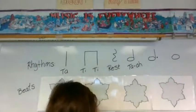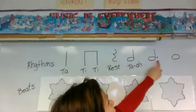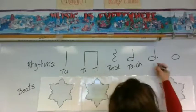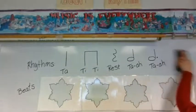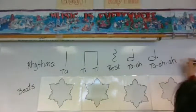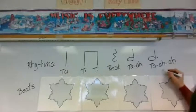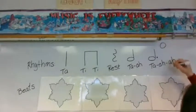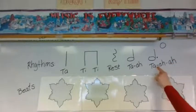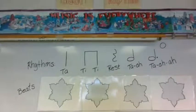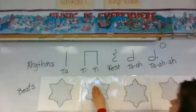What about this fifth rhythm here? It looks just like ta-a, but it has a dot. Maybe I'll put this one here. That's a different one. So we're just looking at this one now. Ta-a. What is the value of ta-a? Ta-a takes up three snowflakes.